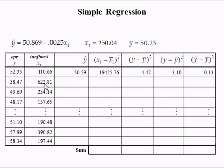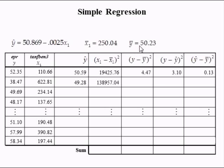The second predicted value is found by plugging 622.81 into the equation, which gives 49.28. The total squared deviation of X from its mean is (622.81 minus 250.04) squared, equal to 138,957.04. The total variation in Y for the second observation is (38.47 minus 50.23) squared, which equals 138.45. The second squared deviation from Y's predicted value is (38.47 minus 49.28) squared, which yields 117.04.